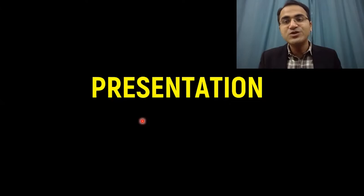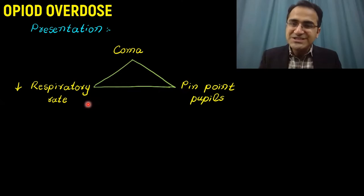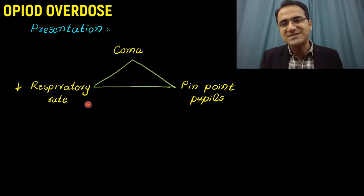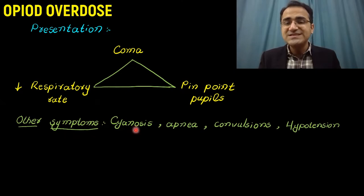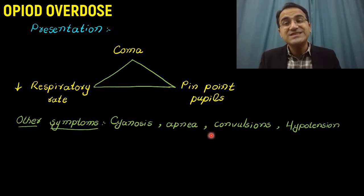The presentation of a patient with opiate overdose is the classical triad of coma, pinpoint pupils, and decreased respiratory rate. Other symptoms include cyanosis due to decreased respiratory rate and decreased oxygenation of blood, episodes of apnea, and sometimes in the pediatric group you may see convulsions.